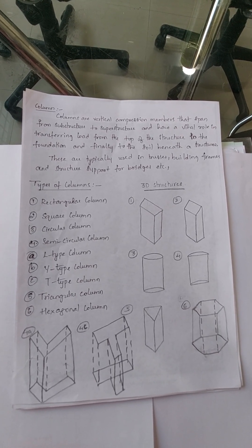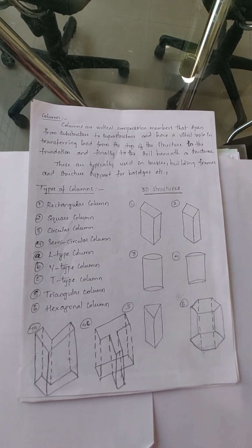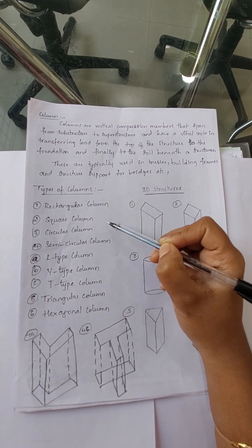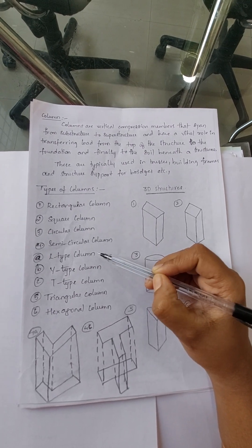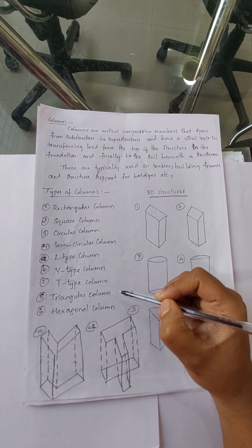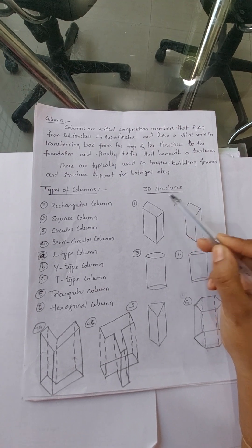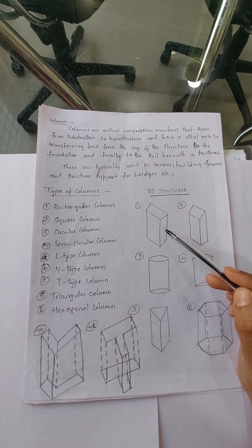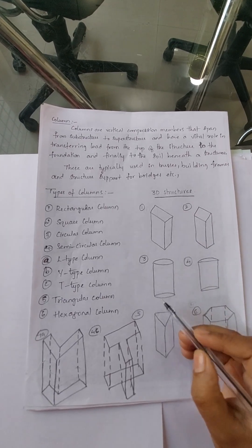What are the different types of columns? Here you can see: rectangular column, square column, circular column, semicircular column — and the semicircular column is again divided into L-type column, Y-type column, and T-type column. The fifth one is triangular column and the sixth one is hexagonal column.